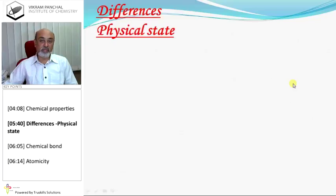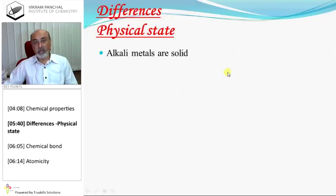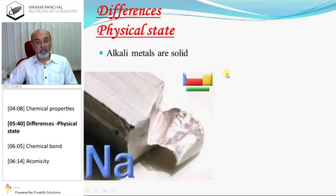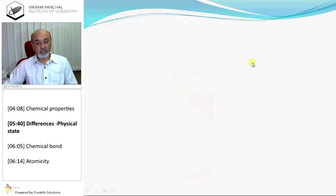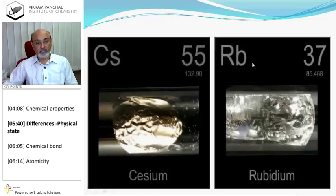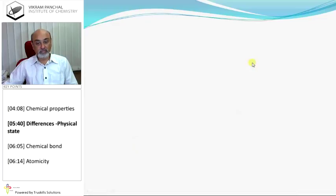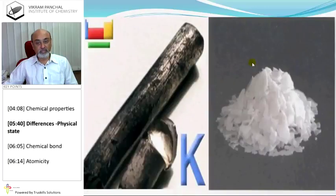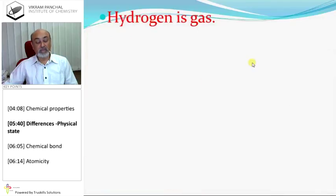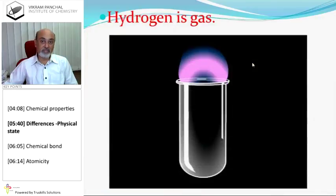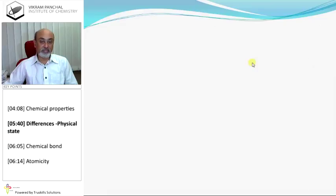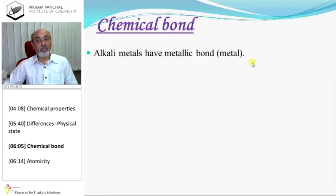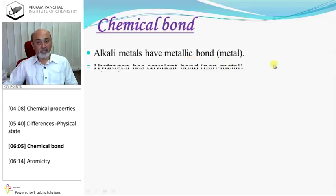There are some differences between hydrogen and alkali metals. Physical state: all alkali metals are solid, while hydrogen is a gas. Chemical bond: alkali metals have metallic bonds, while hydrogen has a covalent bond.